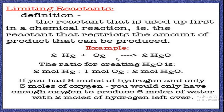Follow this example. From the balanced equation of water formation, we know that the ratio of hydrogen to oxygen is 2:1 — that means 2 moles of hydrogen combine with 1 mole of oxygen to produce 2 moles of water. Now suppose you have 8 moles of hydrogen and 3 moles of oxygen.